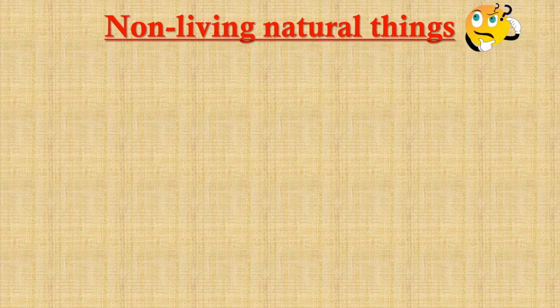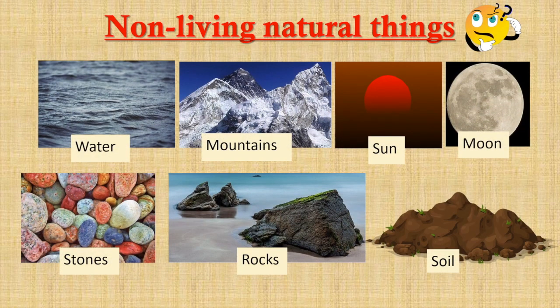What are the non-living natural things? We are surrounded by plenty of non-living natural things — water, mountains, sun, moon, stones, rocks, and soil are a few of them. Besides these, coal, oil, metals, and minerals also come under non-living natural things.